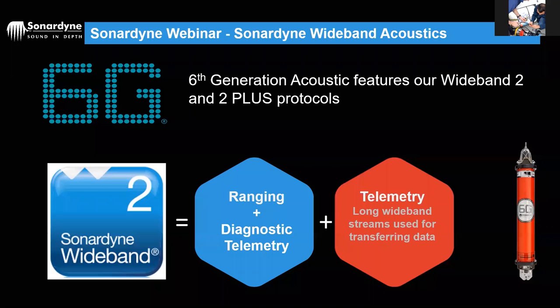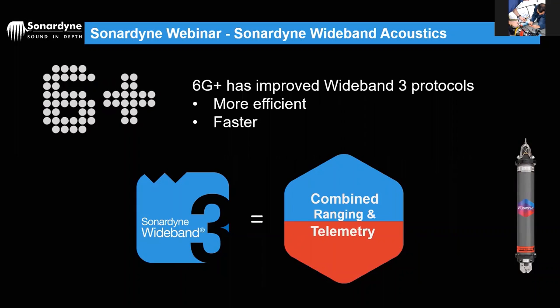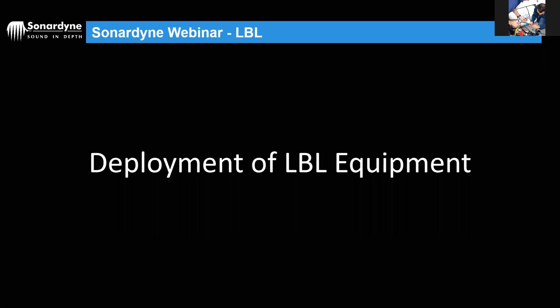All ranging responses come back with diagnostic telemetry embedded. Additional telemetry like sensor data is a separate command. We've recently upgraded to Six Plus — same hardware but better programming and processing — which allows telemetry data to be packaged within ranging responses, making the system faster, more efficient, and easier to operate.